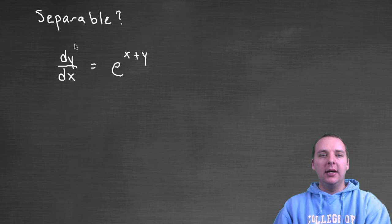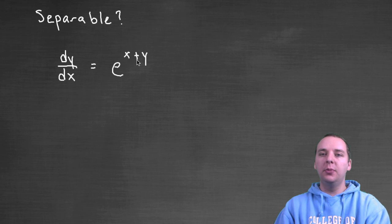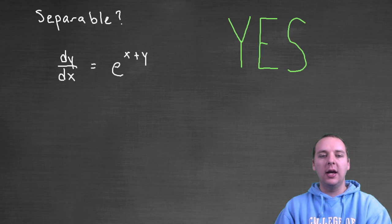Is this guy separable: e to the x plus y? Granted, we do see a plus and they're both in the exponent, which is a little weird. So can we write that as a function of x times a function of y? The answer to this one is actually yes. We actually can do that and here's how.